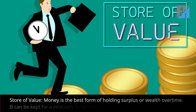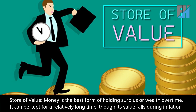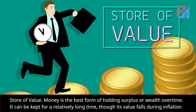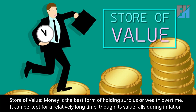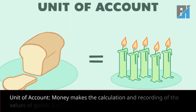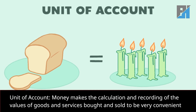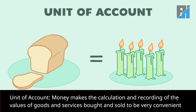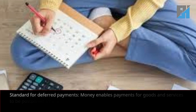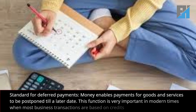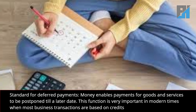Store of value: money is the best form of holding surplus or wealth over time; it can be kept for a relatively long time, though its value falls during inflation. Unit of account: money makes the calculation and recording of the values of goods and services bought and sold very convenient.